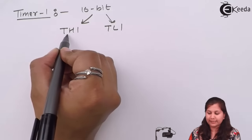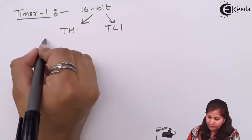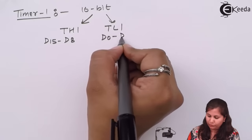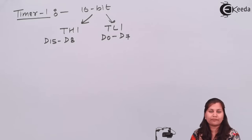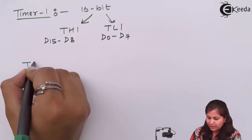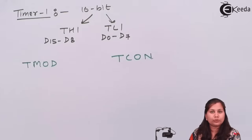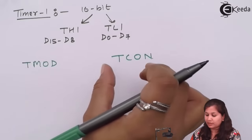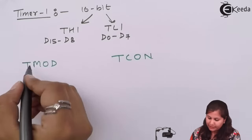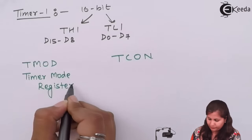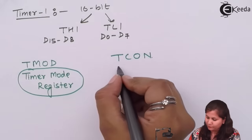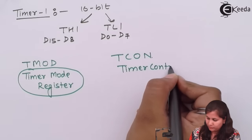Timer 1 higher bytes and Timer 1 lower bytes span from D15 to D8 and D0 to D7 respectively. Now let us look at the two registers associated with the functions of these timers and counters. We have two registers: TMOD and TCON. These are two special function registers — registers with a special function associated with them. These two registers are for timer operation: TMOD is the timer mode register and TCON is the timer control register.